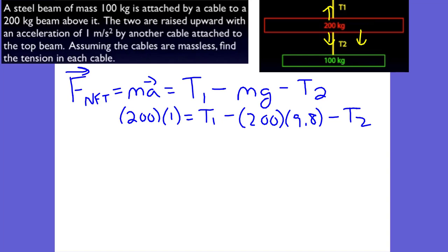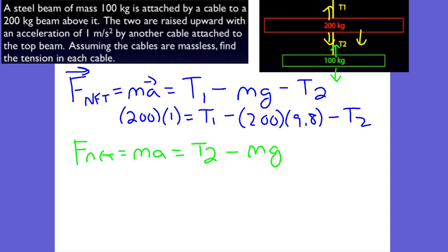Now let's take a look at that second object, the 100 kilogram mass. This 100 kilogram mass is being affected by T2 and also by its mass times gravity. F net equals mass times acceleration. T2 is working in the positive direction minus its weight of mass times gravity. We have 100 times its acceleration, and this acceleration is still 1 — the same acceleration as the 200 kilogram mass.